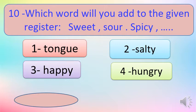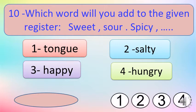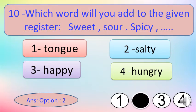This question is quite easy. The word register — sweet, sour, spicy — is about taste. Looking at the options: tongue is not a taste; happy is a feeling; hungry relates to hunger. Option number two, 'salty,' is a taste word and fits the register. We can say sweet, sour, spicy, and salty. So option number two is correct — mark a dark circle on number two.